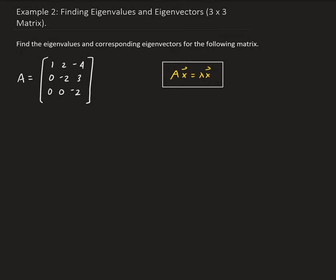We're going to approach this like we did in example one. We have AX equals lambda X, which is equivalent to AX minus lambda X equals zero. We can factor out X to get (A minus lambda I) times X equals zero.